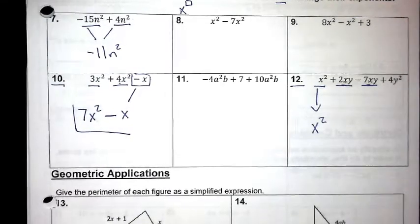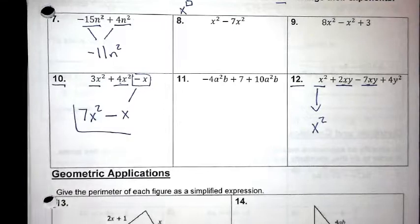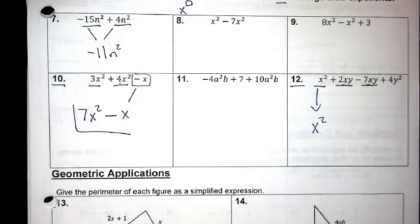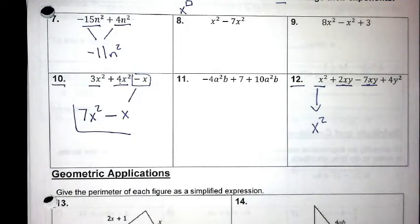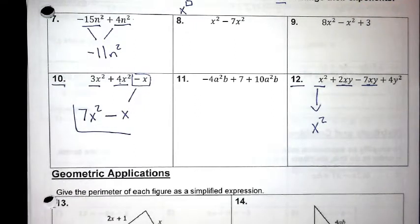Let's continue with where we're at — combining like terms. The most important thing is to make sure that when we combine like terms, it's just like the warm-up: you combine similar variables with similar variable terms, and constants with constants. Constants are just numbers without a variable.